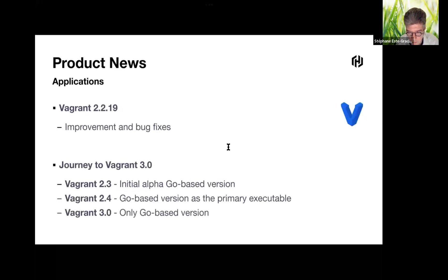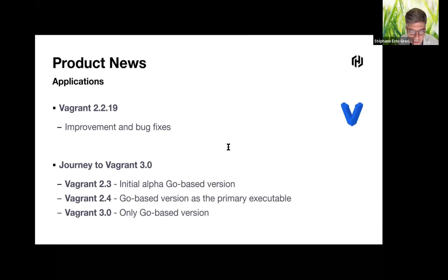Last but not least, Vagrant — the oldest product from HashiCorp. The new Vagrant leverages a declarative configuration file describing software requirements, packages, OS configuration, users, and more. The latest version implements improvements and bugfixes.